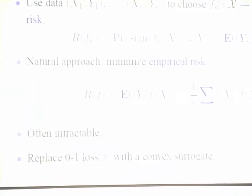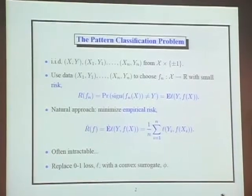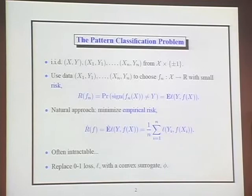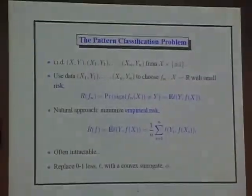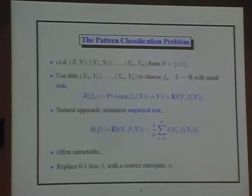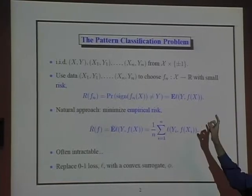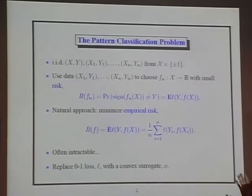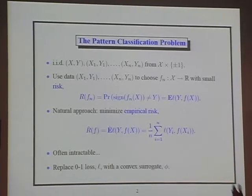We do that in a probabilistic setting. We assume that we have some joint distribution over the product space X times Y. So the X_i's are patterns in some space X, and the Y's are labels. We're interested in classification; here I'll restrict our attention to the two-class case, so the labels are either plus or minus one. The joint distribution models the relative frequency of different patterns and the conditional probability that a label might be one given a particular pattern.